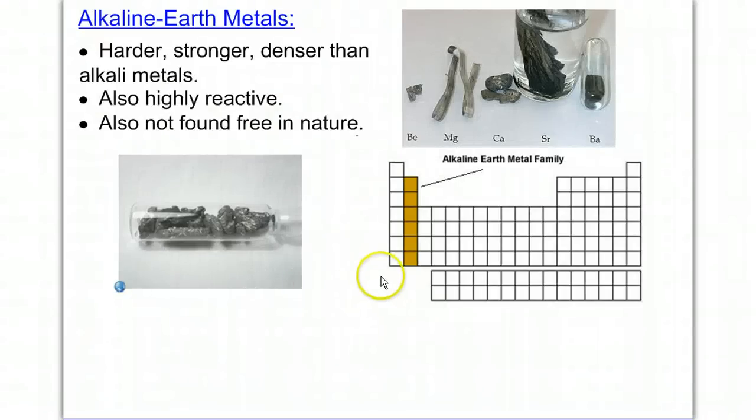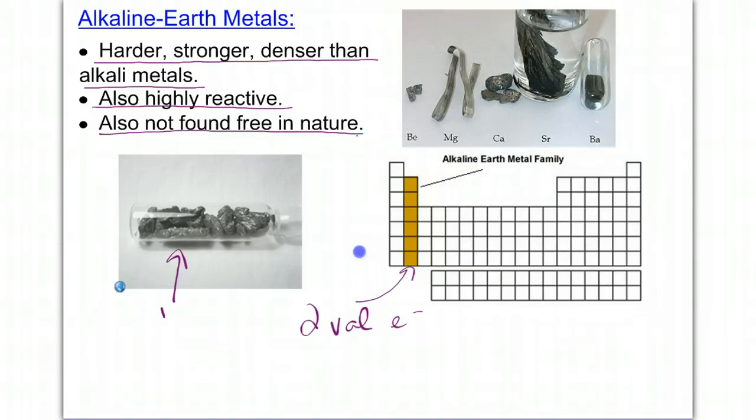Alkaline earth metals are located in group 2 on the periodic table. Elements in this group all have 2 valence electrons. They are harder, stronger, and denser than the metals in group 1, the alkali metals, but they are also highly reactive, even though they're not as reactive as group 1. They're also not found free in nature due to their reactivity. This is an example of calcium. Notice that strontium and barium are being kept under either kerosene or in argon gas to keep them from reacting with the air around them.